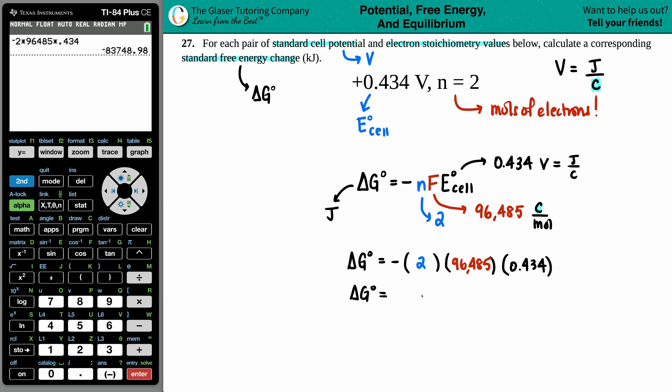Now if we were doing sig figs, chances are we're going to go by this because these two moles of electrons, they don't have any precision, right? It's just a standard two. So I will use three sig figs here, so the ΔG° would be a negative 83,700.